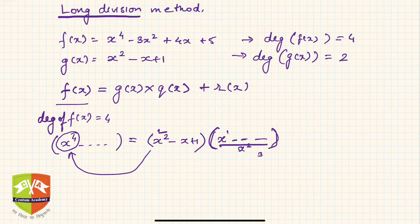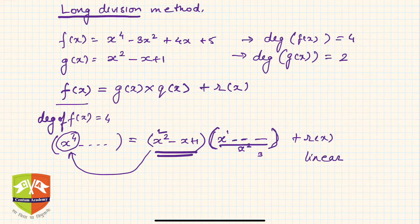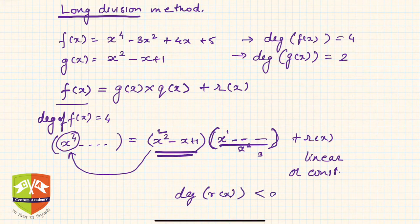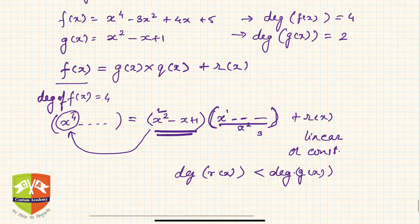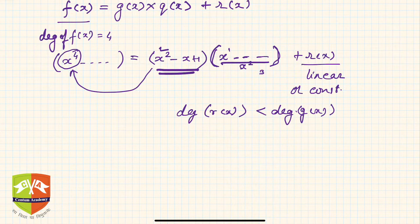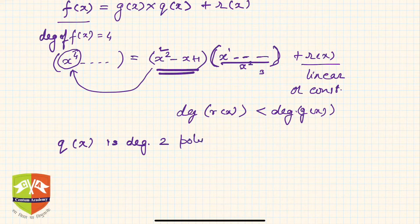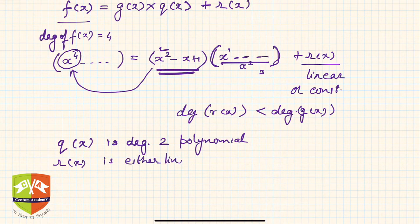Now what about the remainder r(x)? The degree of r(x) must be less than the degree of g(x). Since the degree of g(x) is 2, r(x) must be either a linear polynomial or a constant polynomial. So the conclusion is: q(x) is a degree-2 (quadratic) polynomial, and r(x) is either linear or constant.